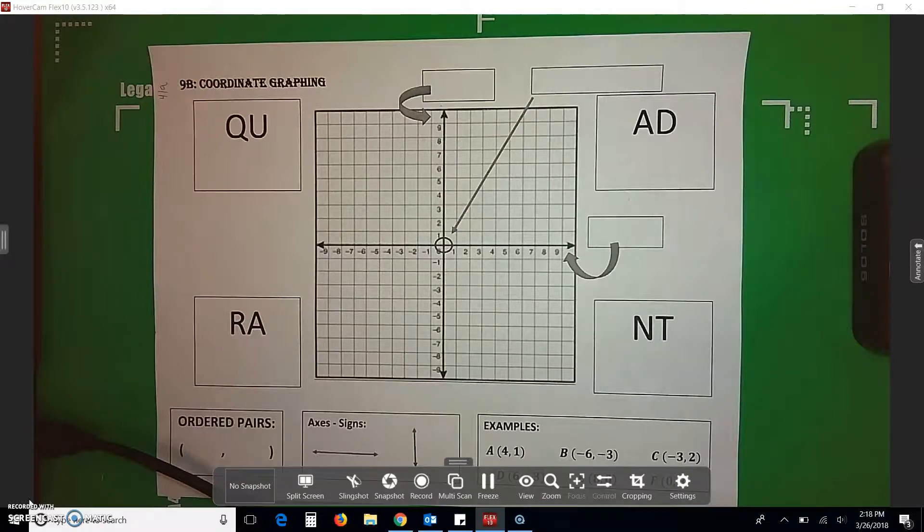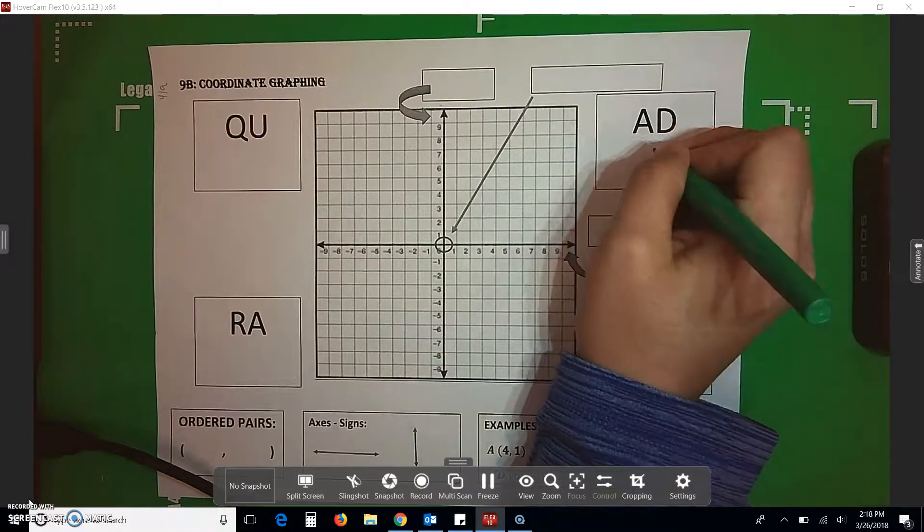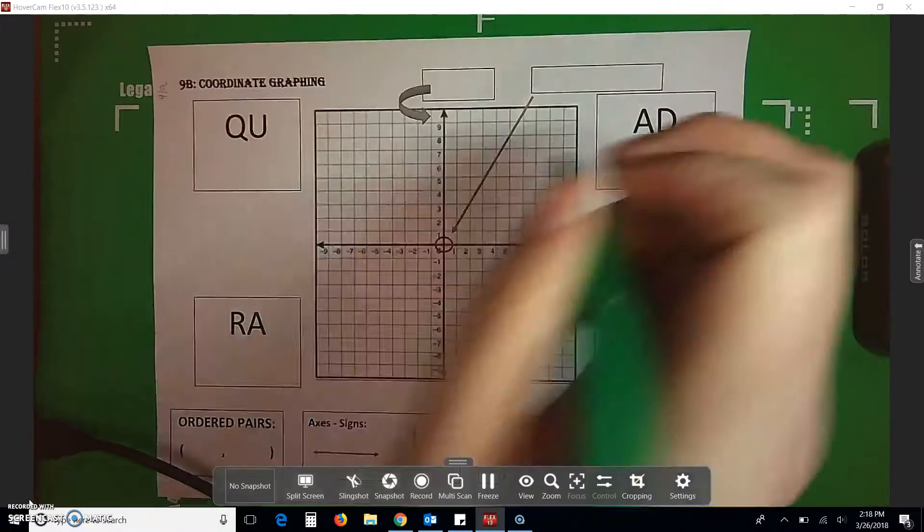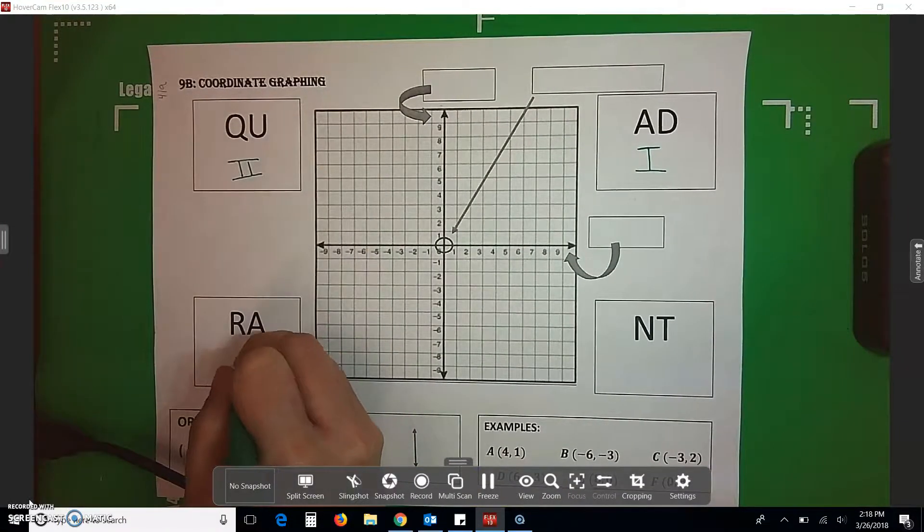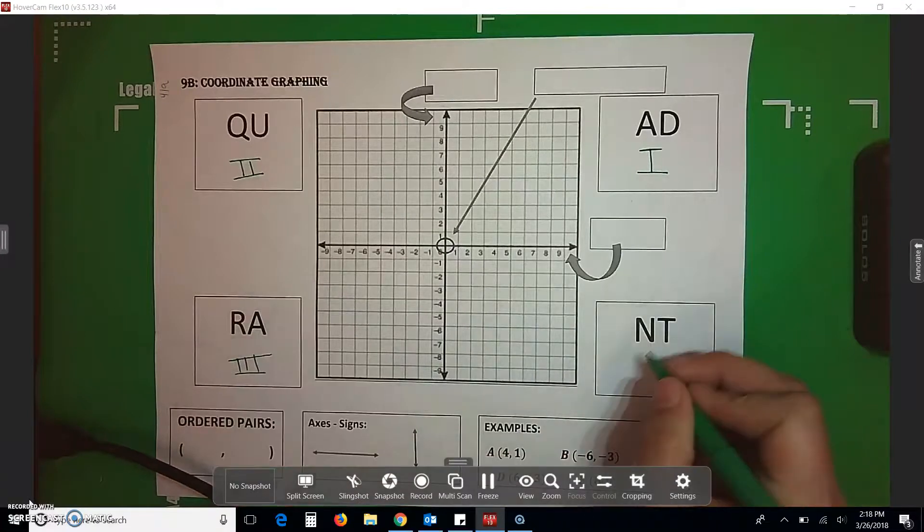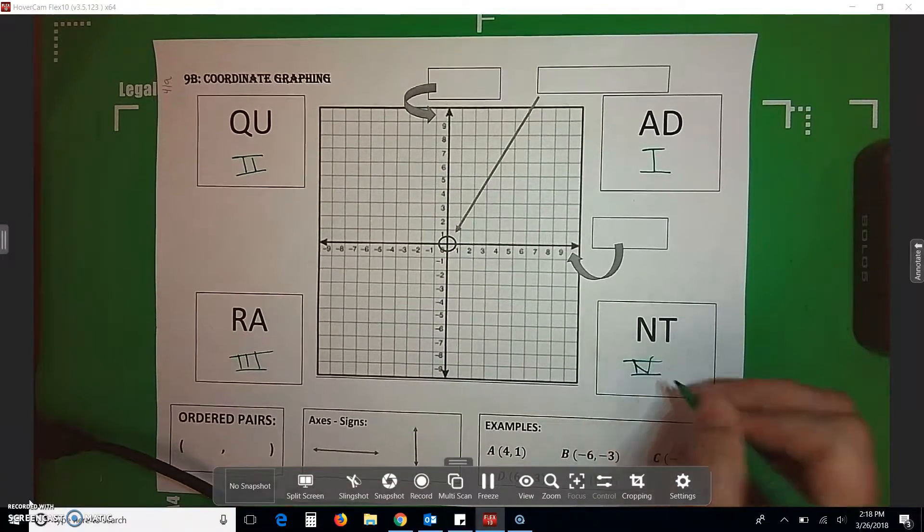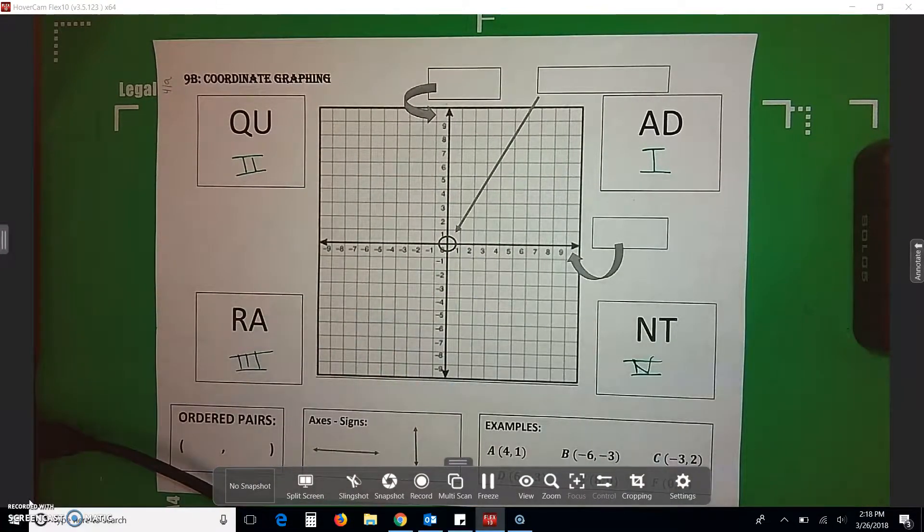So, first thing I want you to know is that this is quadrant 1. And then we go counterclockwise. Quadrant 2, quadrant 3, and quadrant 4. And they are written in Roman numerals.